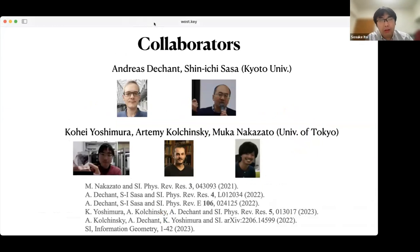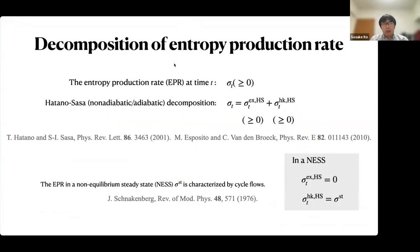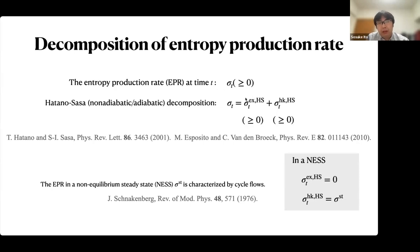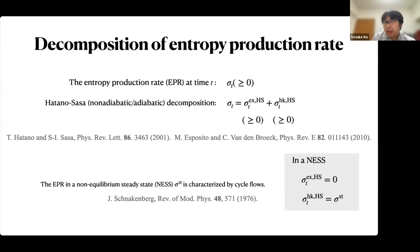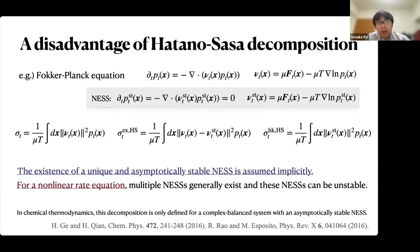This is a list of collaborators: Andrea, Shinichi, Kohei, Artemi, and Muka. Several papers on these topics have been published. First, I would like to introduce the conventional decomposition of the entropy production rate, known as the Hatano-Sasa decomposition — or adiabatic/non-adiabatic decomposition. The entropy production rate is decomposed into two non-negative parts: excess entropy production rate and housekeeping entropy production rate.